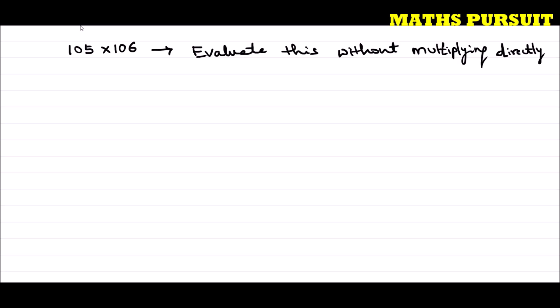Now, 105 I can write as 100 plus 5. If I write 105 as 100 plus 5, nothing wrong is going to happen.